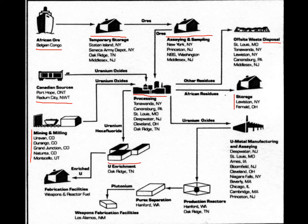The uranium hexafluoride was sent on to uranium enrichment at Oak Ridge, Tennessee. The enriched uranium was sent to fabrication facilities. Uranium oxides were sent to uranium metal manufacturing and assaying at a number of different locations. They went into production reactors and the Purik separation process.